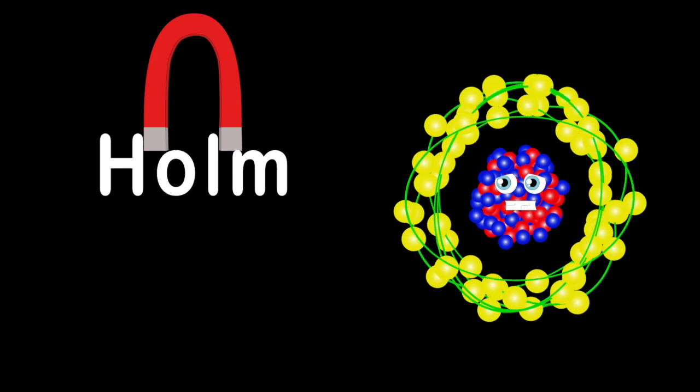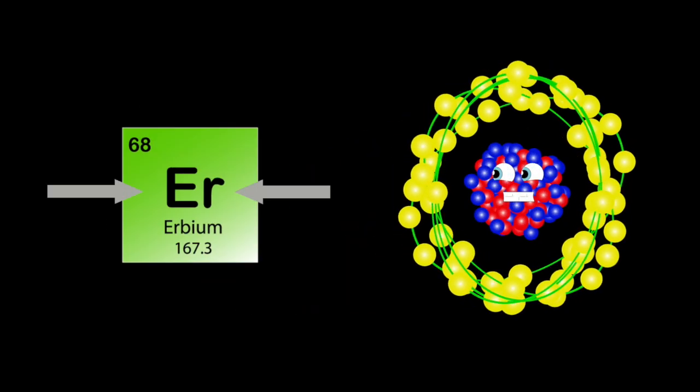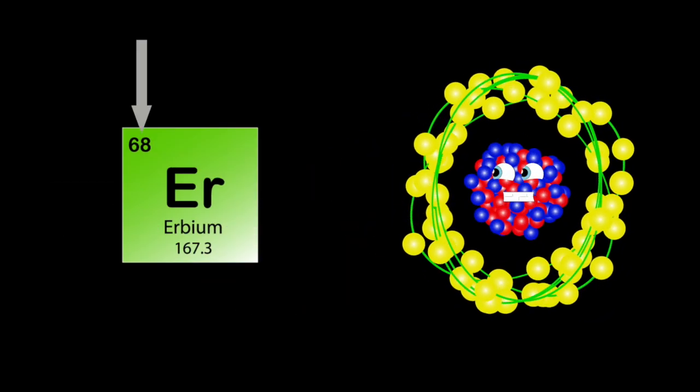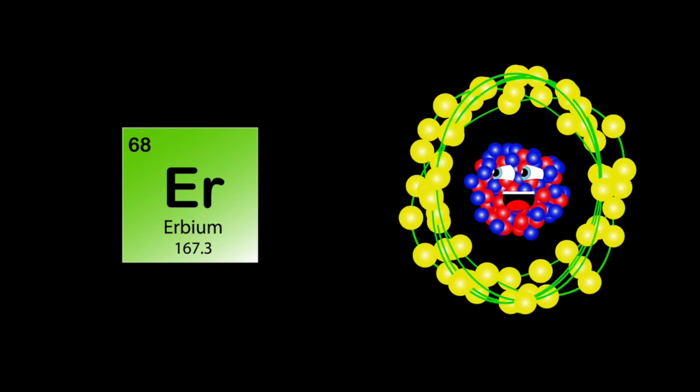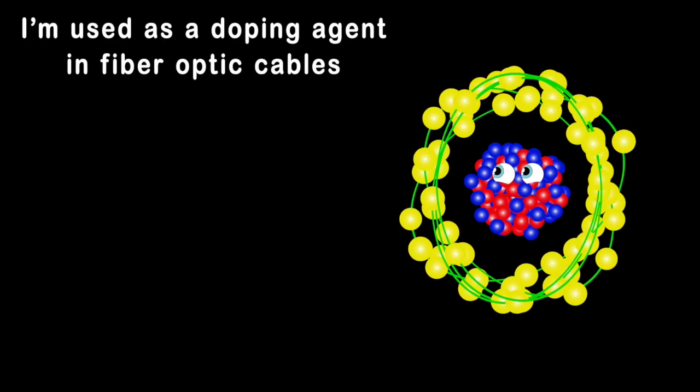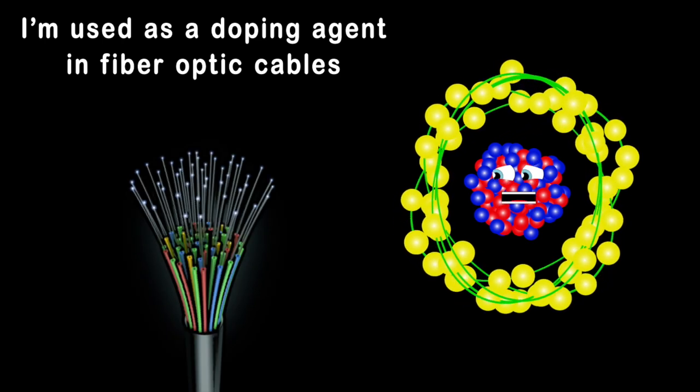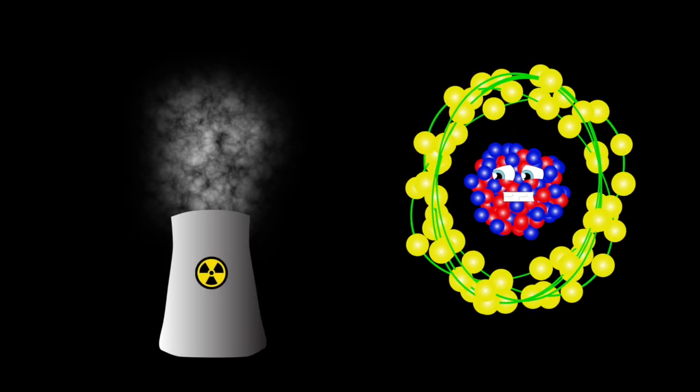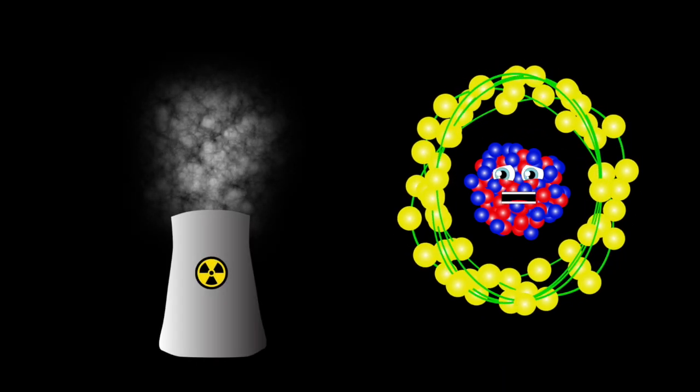My symbol is ER, I am erbium, atomic number's 68, atomic mass is 167. I'm used as a doping agent in fiber optic cables, I am used in the nuclear power industry when enabled.